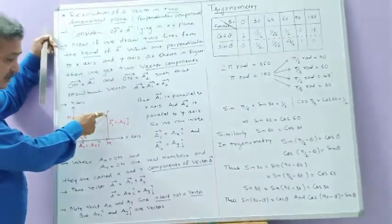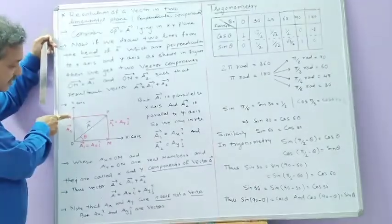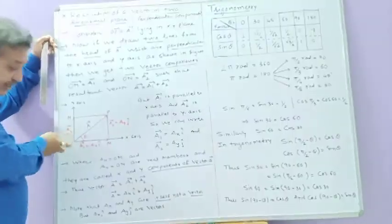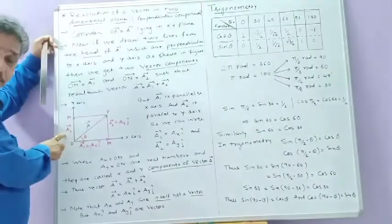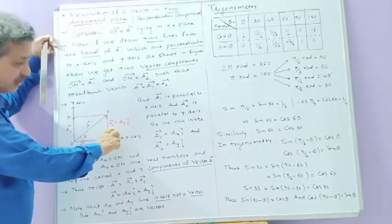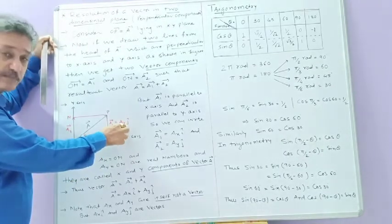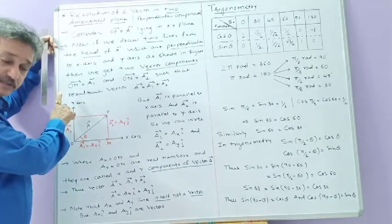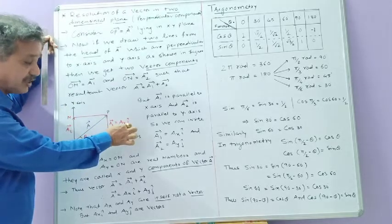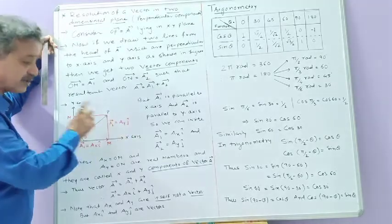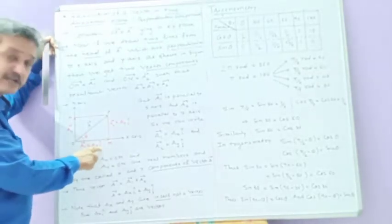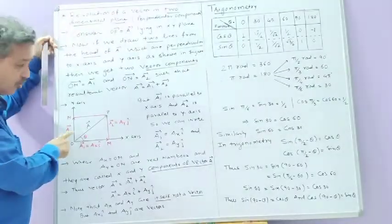At the same time, the other perpendicular line PN is perpendicular to the y-axis and cuts at point N. Measuring the distance from O to N and putting an arrow gives vector ON, which is vector A2. This can be written as Ay·ĵ, where Ay is simply the scalar distance from O to N, and ĵ is the unit vector in the y-direction. So we get two vector components of vector A: one along x is A1 = Ax·î, and another along y is A2 = Ay·ĵ.